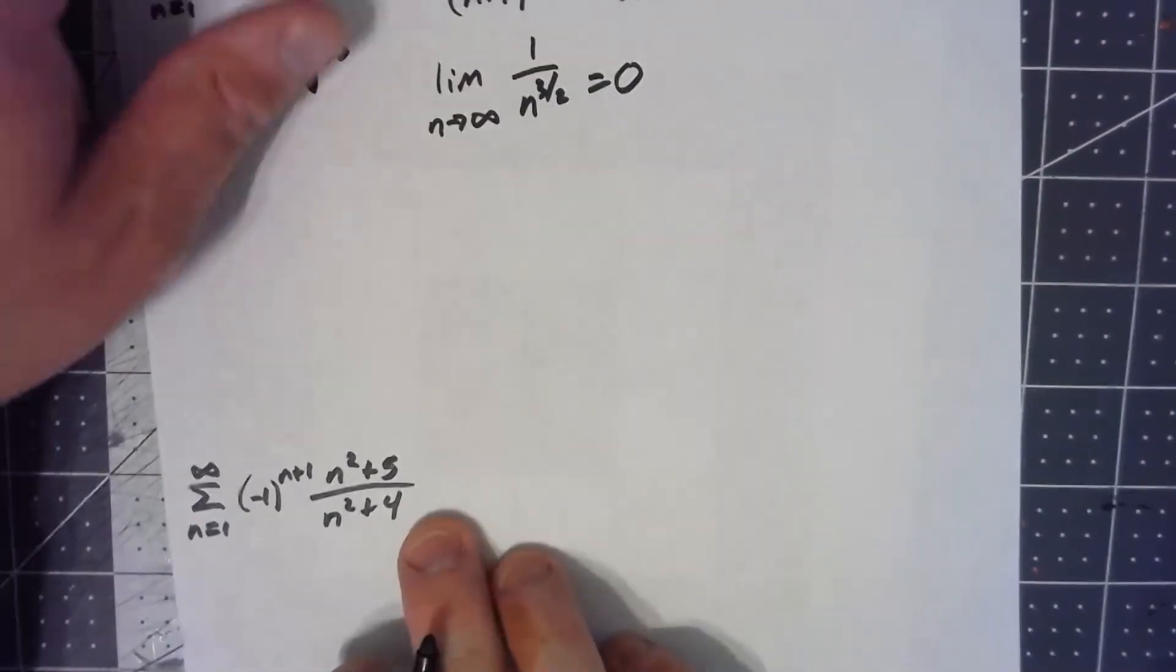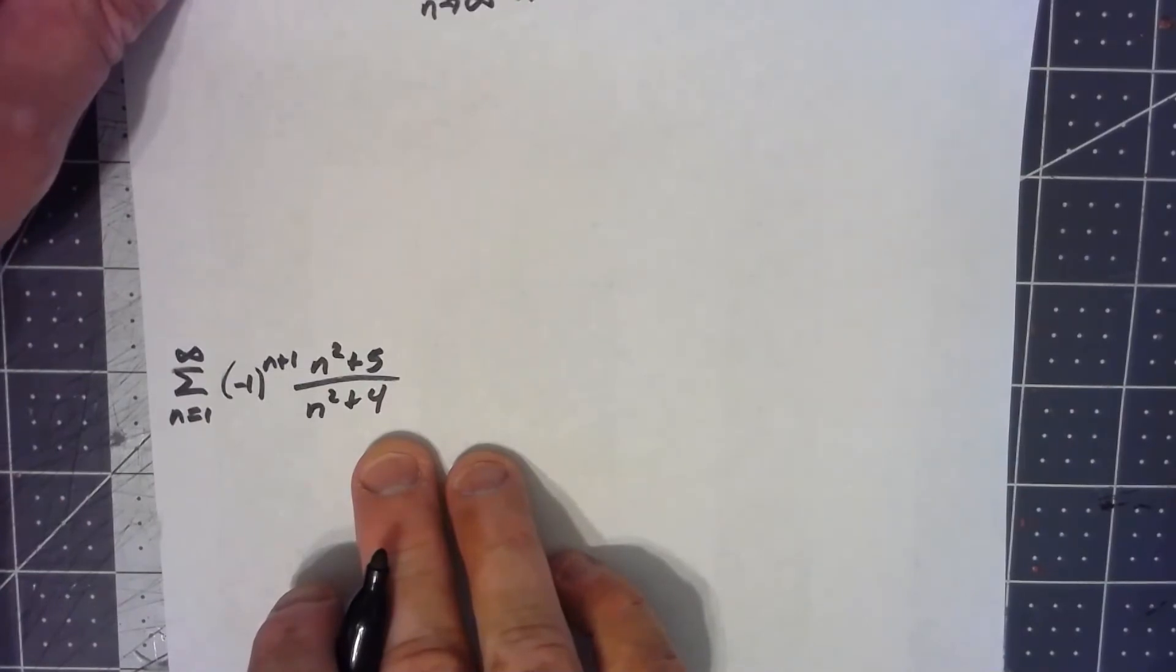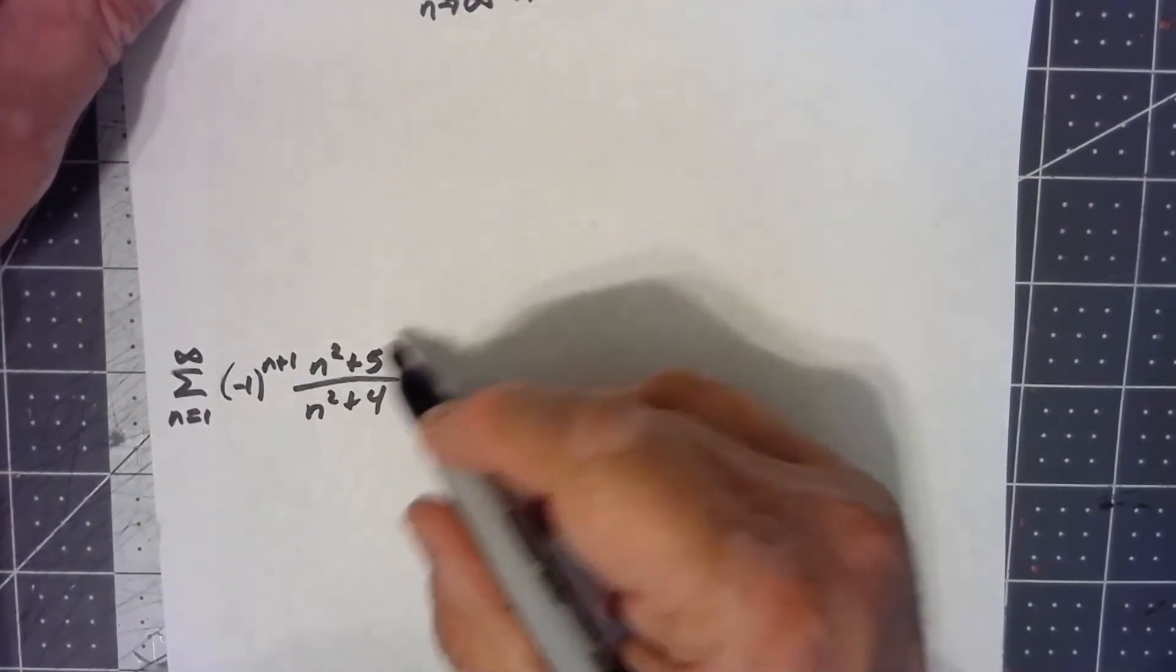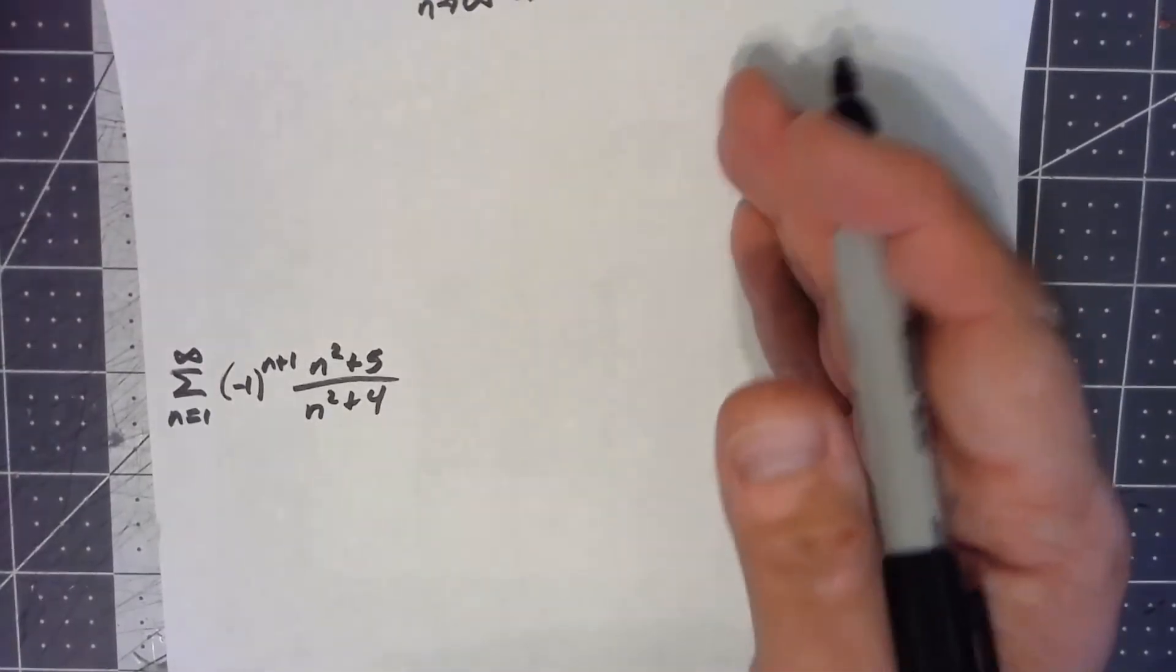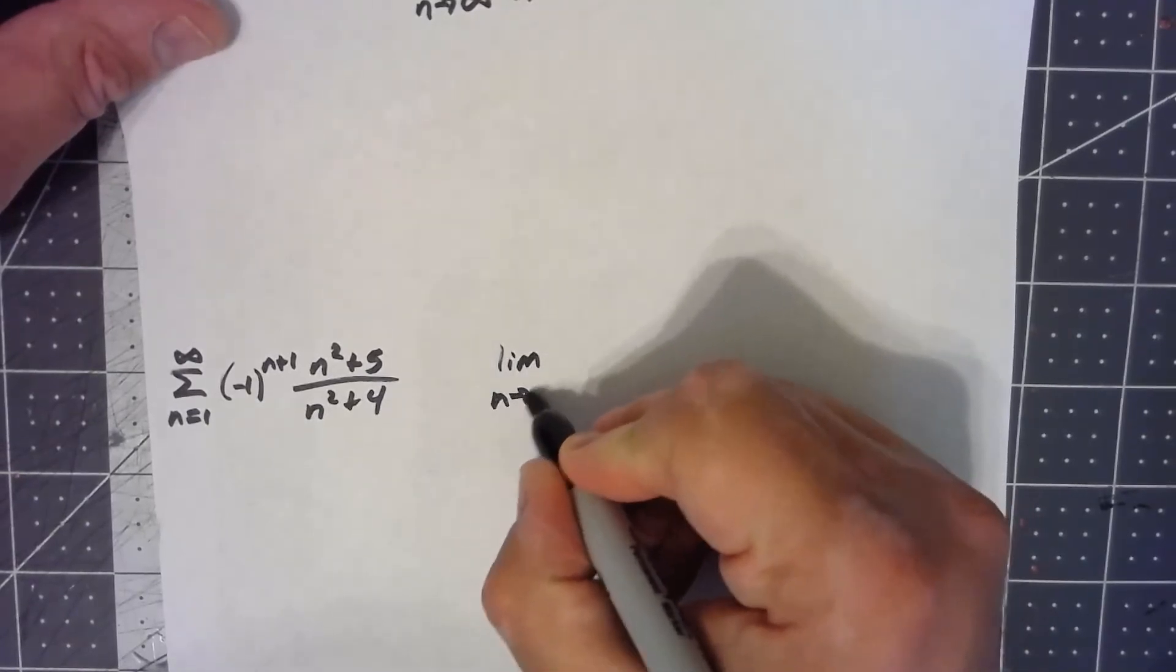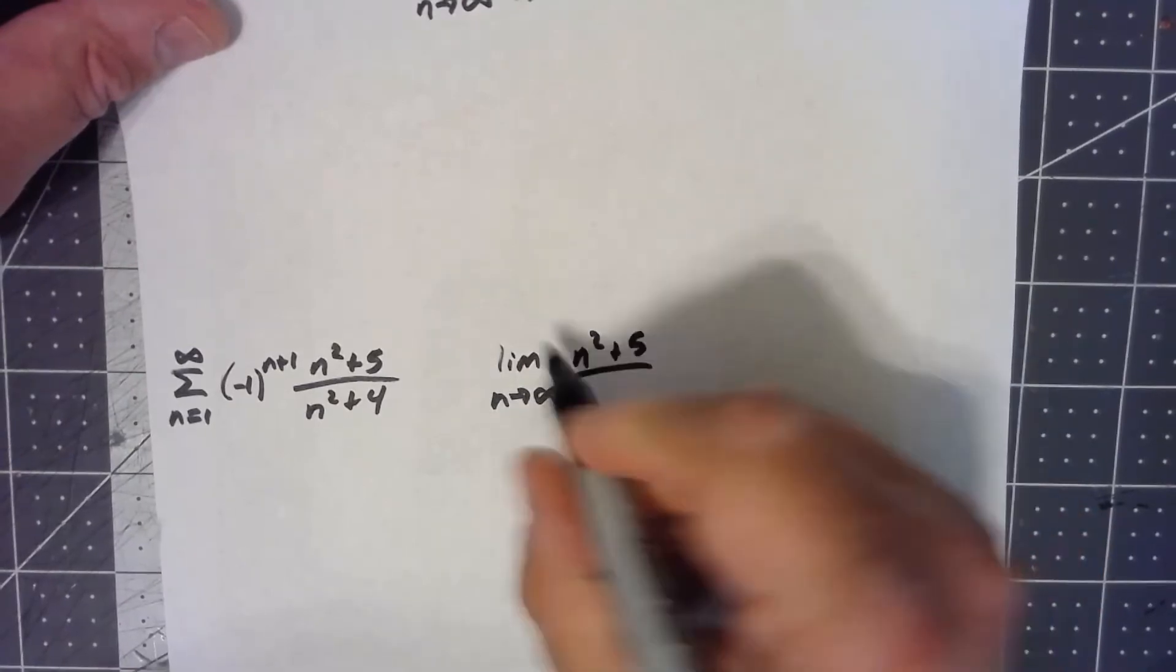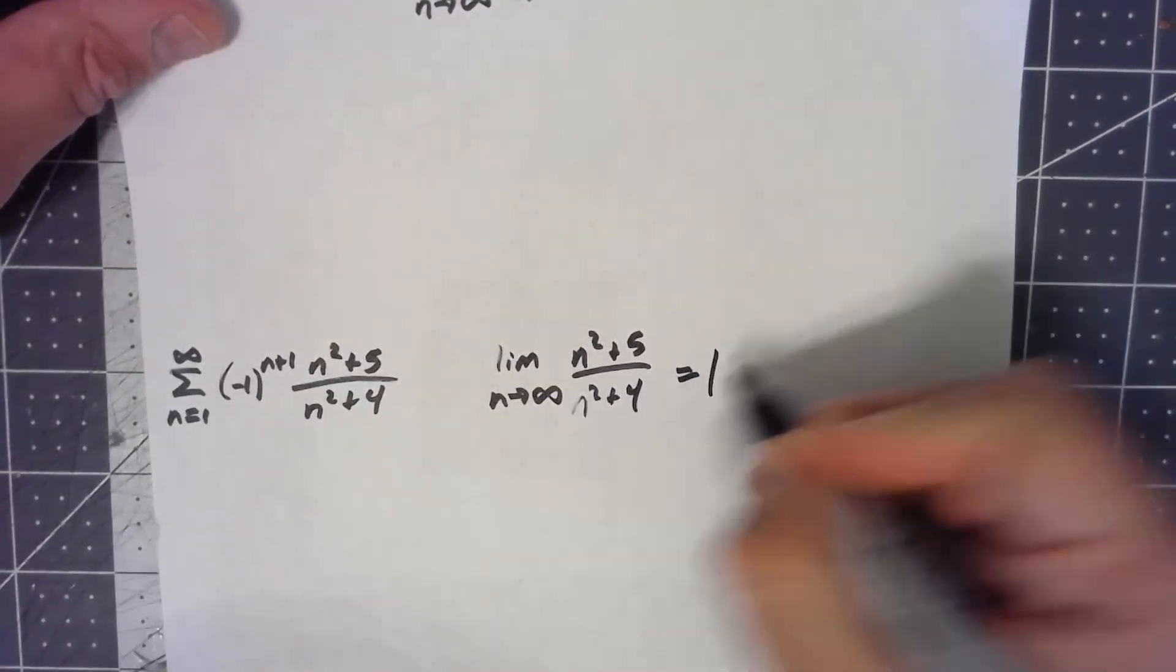Now, what about this one? Well, if I look at this, it's a little bit hard to see that the terms are non-increasing, but I actually don't even need to worry about that. Because if I look at the limit as n goes to infinity of the non-sign part of that thing, that limit's one.